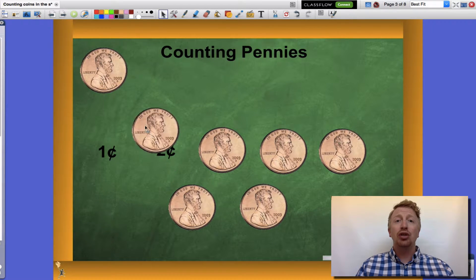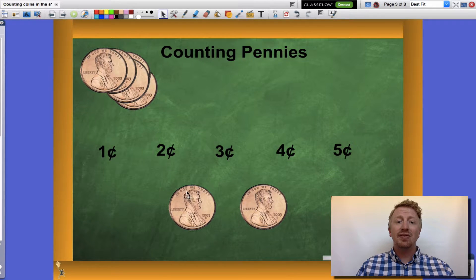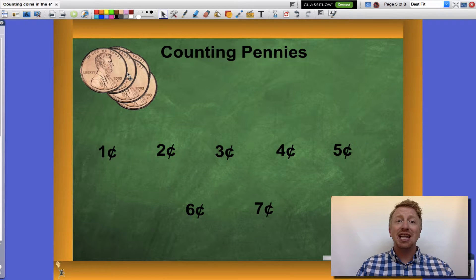then two cents, three cents, four cents, five cents, six cents, and seven cents. I had seven pennies altogether which were worth a total of seven cents. I counted by ones in order to get that.